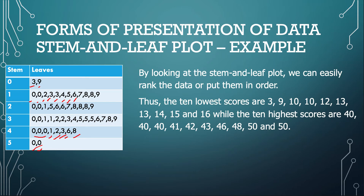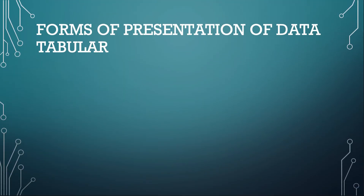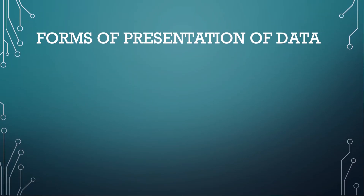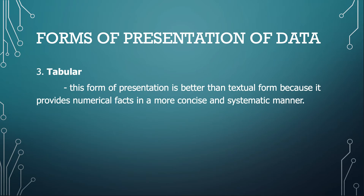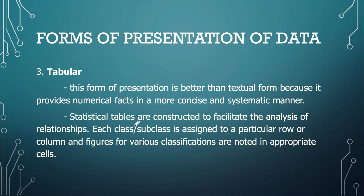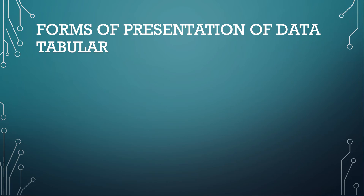Moving on, we also have another form of representing data: making use of a table. That is the tabular form. This form of presentation is better than the textual form, and some say it's better than the stem and leaf plot, because it provides numerical facts in a more concise and systematic manner. Statistical tables are constructed to facilitate the analysis of relationships — each class or subclass is assigned to a particular row or column, and figures for various classifications are noted in appropriate cells.